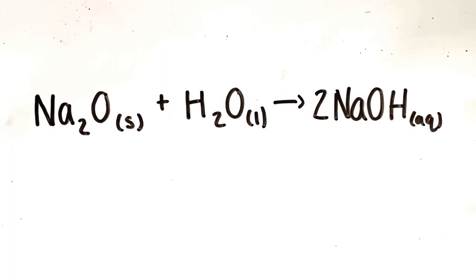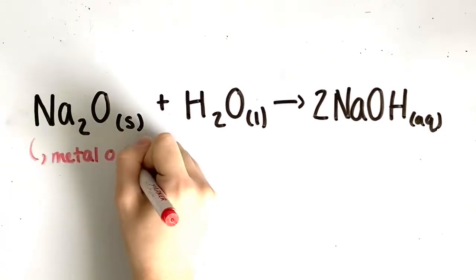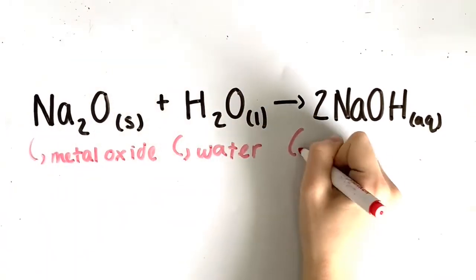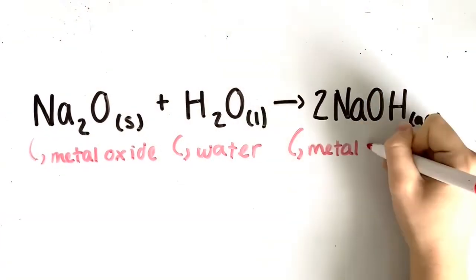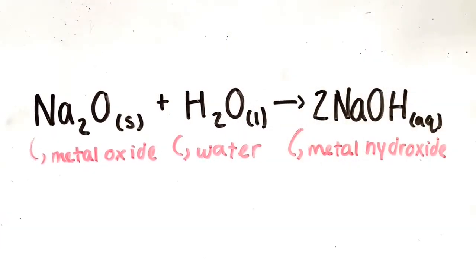Firstly, a metal oxide plus water yields a metal hydroxide. For example, sodium oxide plus water yields sodium hydroxide. The metal oxide is sodium oxide, H₂O is the water, and it yields sodium hydroxide, which is the metal hydroxide.